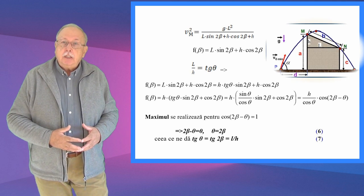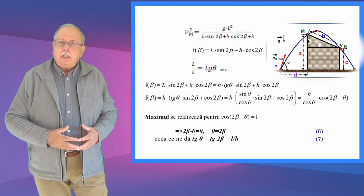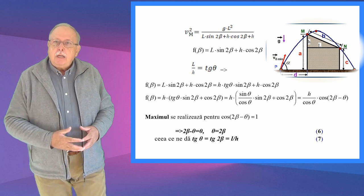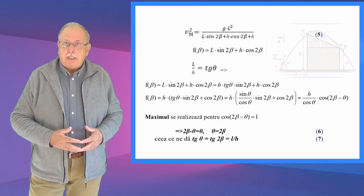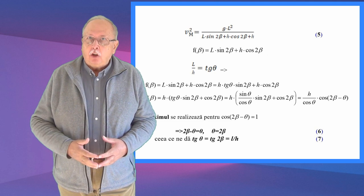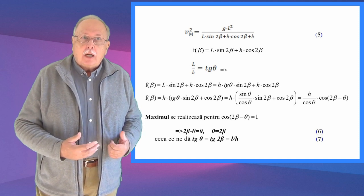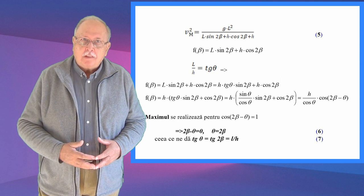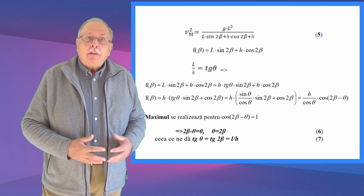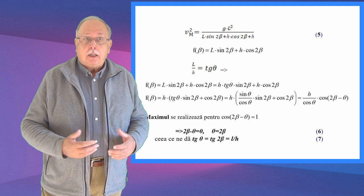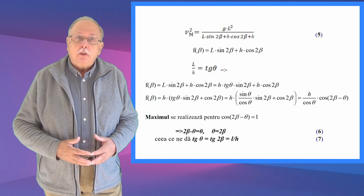Notăm L/H egal cu tangentă de theta, și atunci funcția F(beta) devine H·tangentă de theta·sinus de 2beta plus H·cosinus de 2beta. Folosind un pic de trigonometrie, putem exprima F(beta) ca fiind egală cu H/cosinus de theta înmulțit cu cosinus de (2beta minus theta). Maximul se obține pentru cosinus de (2beta minus theta) egal cu 1, ceea ce înseamnă că theta este egal cu 2beta.